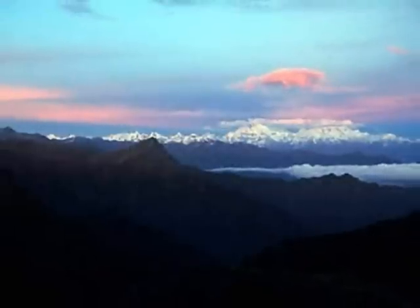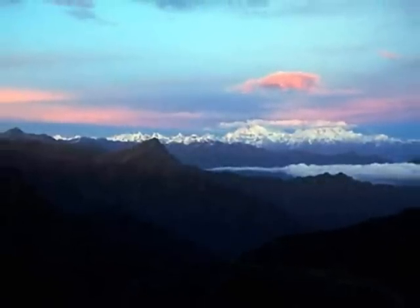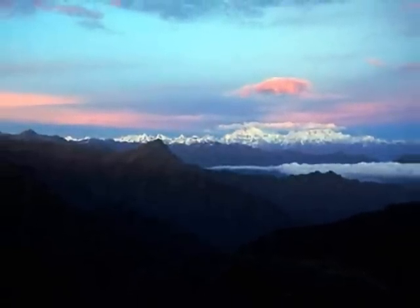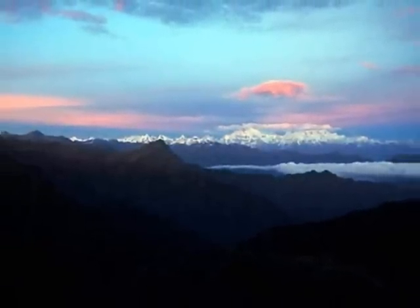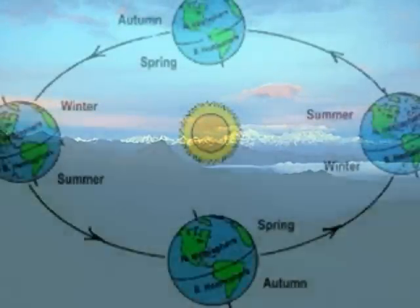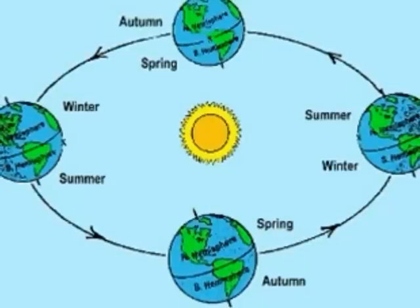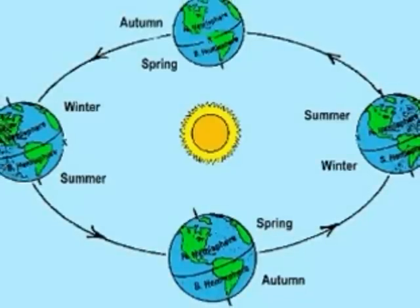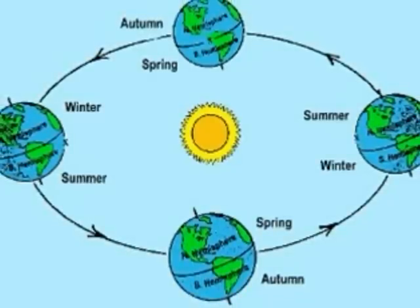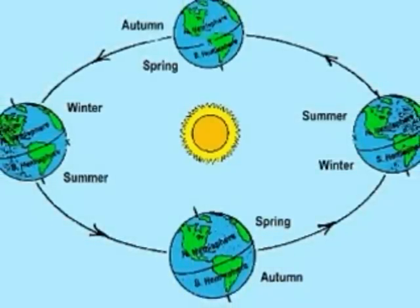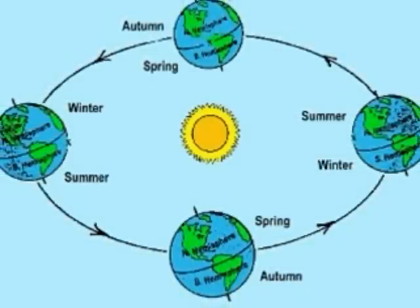The sun shines all of the time. The spinning or rotation of the earth is what makes day and night. The sun also stays in one place. The orbit of the earth around the sun makes it look as if the sun moves across the sky.